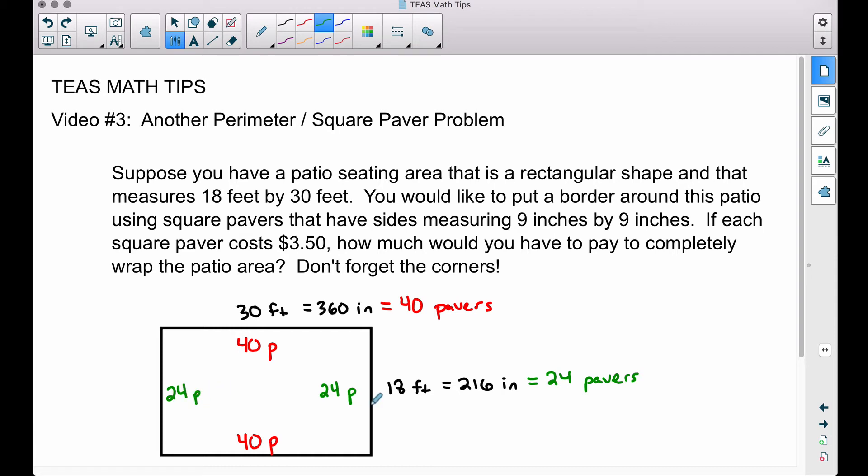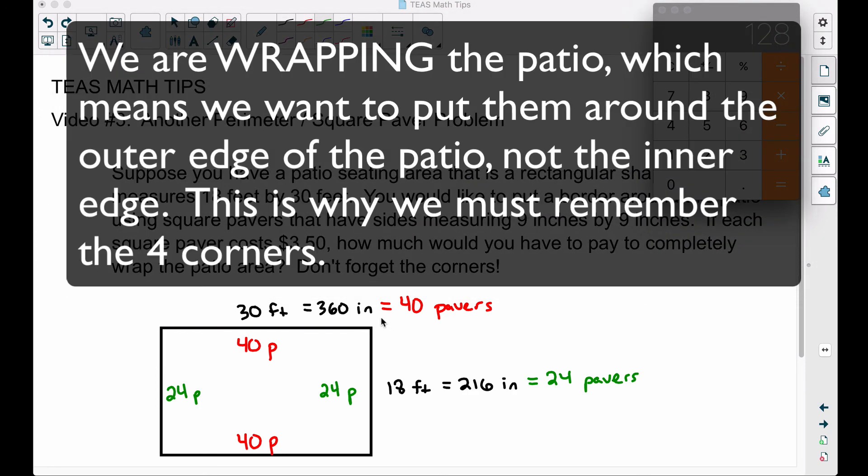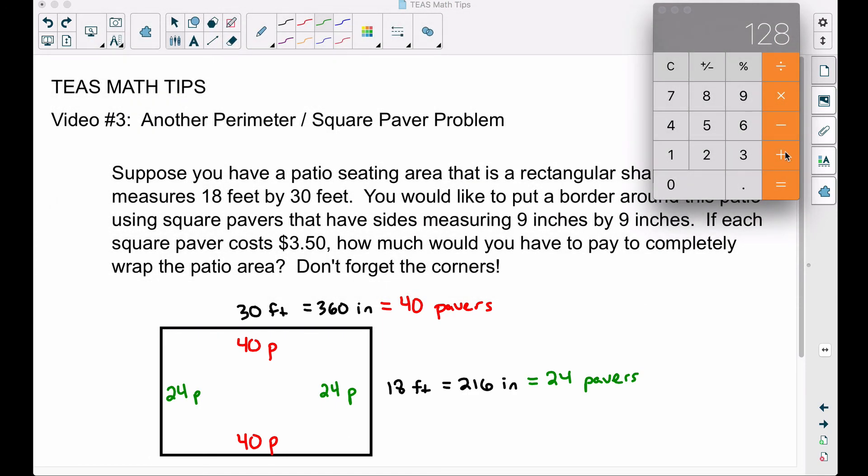So how many pavers do we need in all? Well, we need 40 plus 40, that's the two 30-foot sides, plus 24 plus 24 because we have two of those sides there as well. Now don't forget your corners. What's going to happen here is you're going to leave an open corner here, here, here, and here. So we want to add on four additional pavers as well, for a total of 132 pavers.